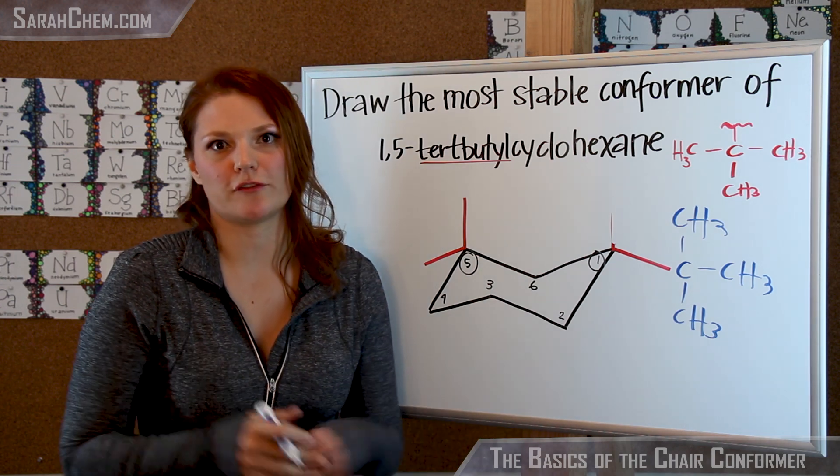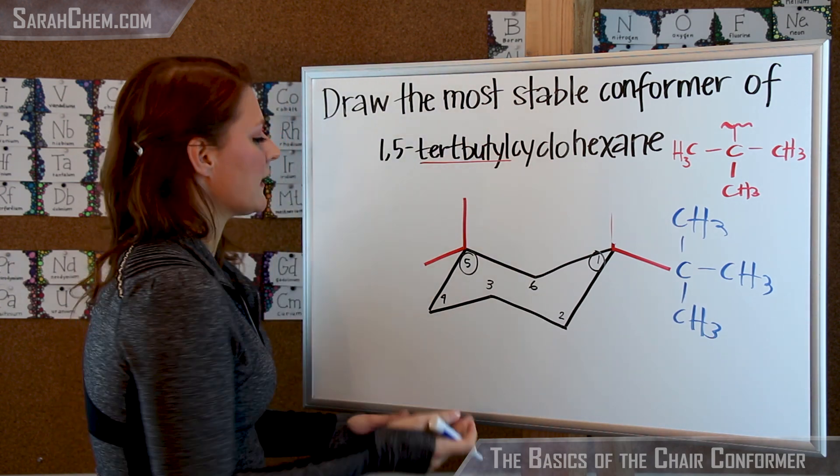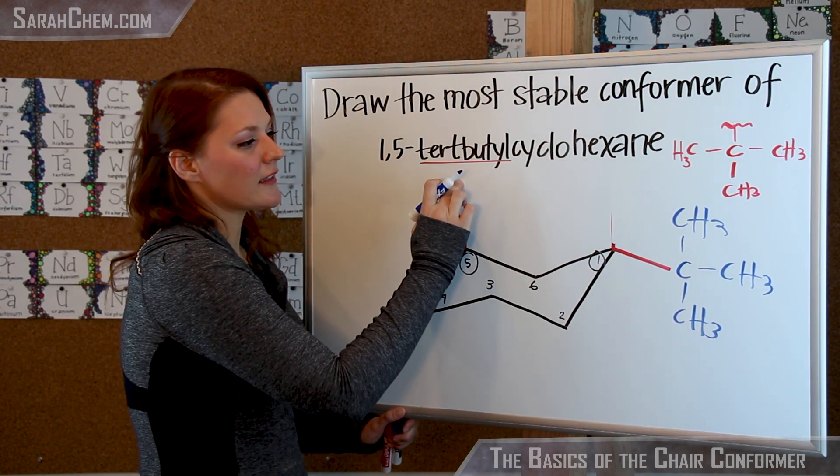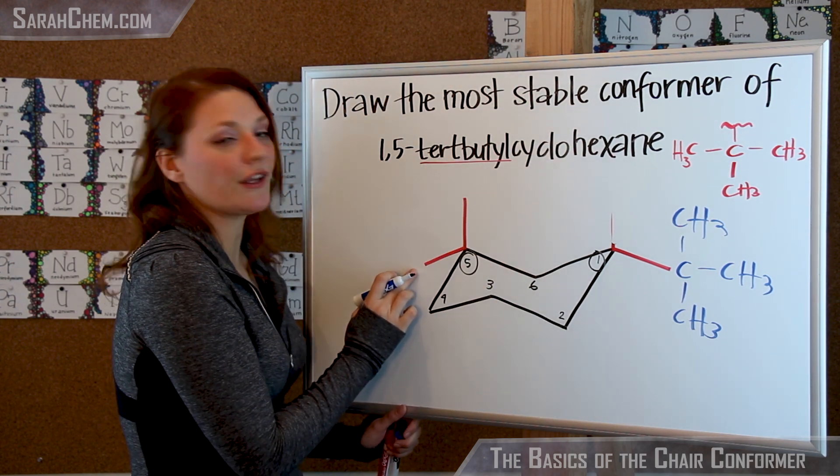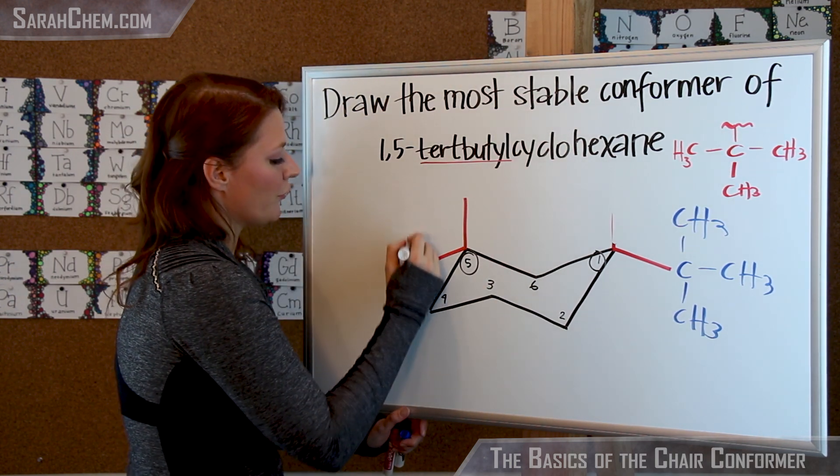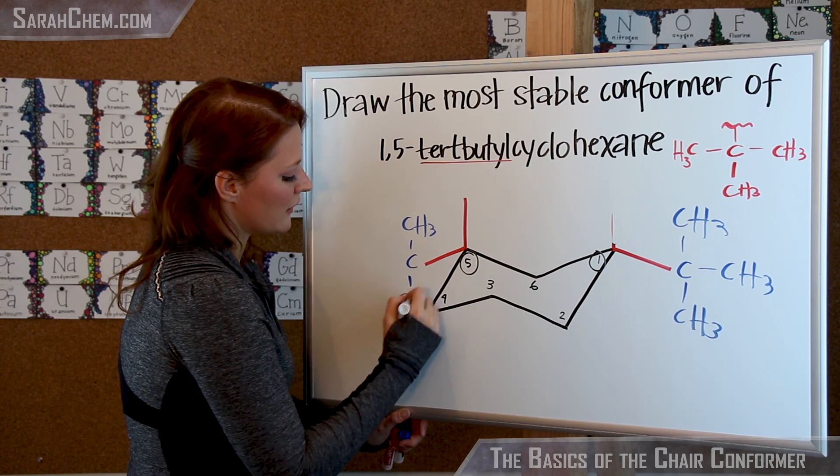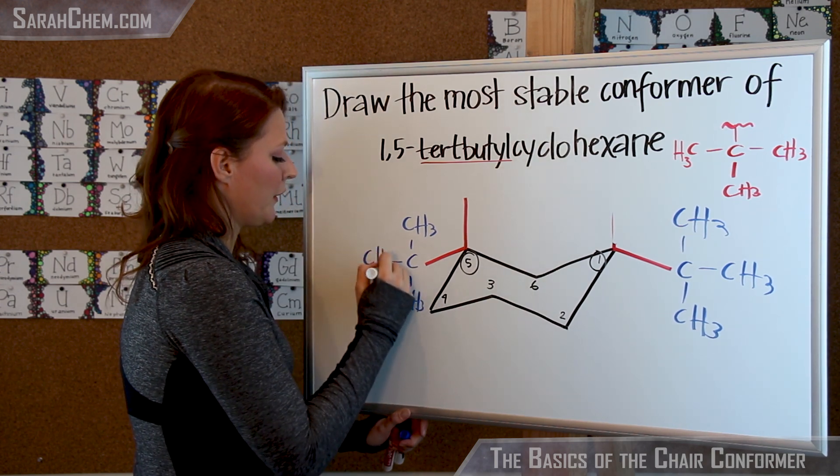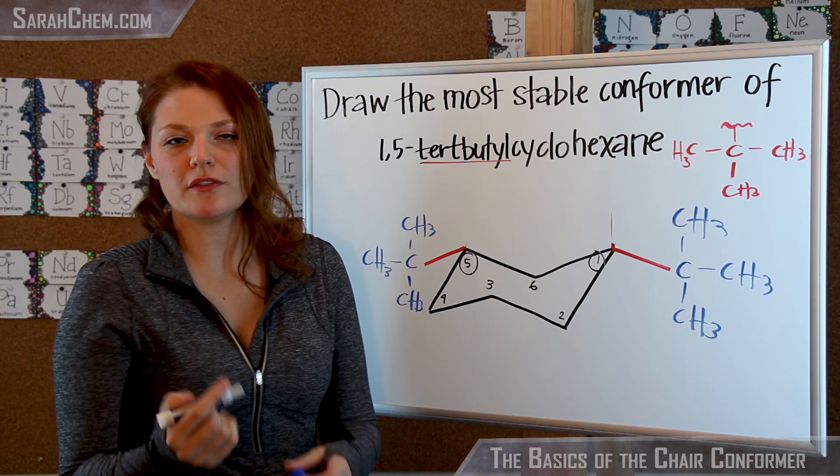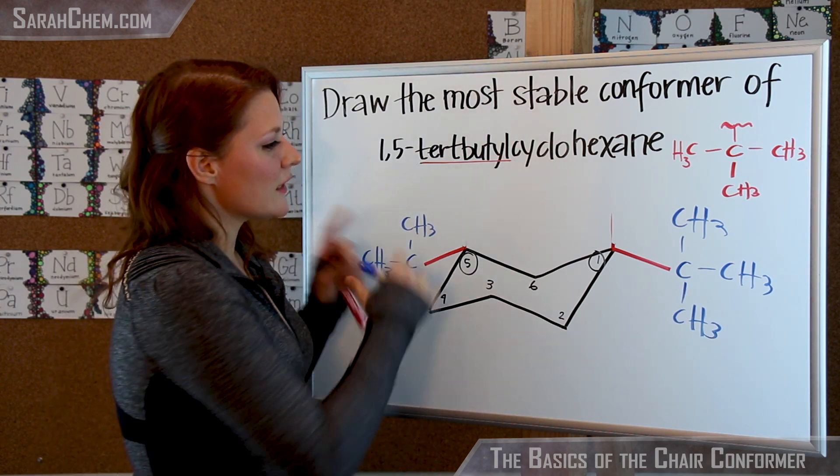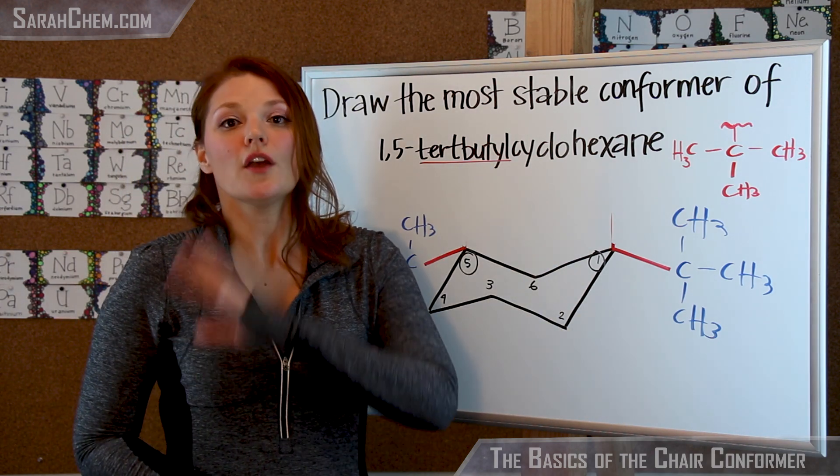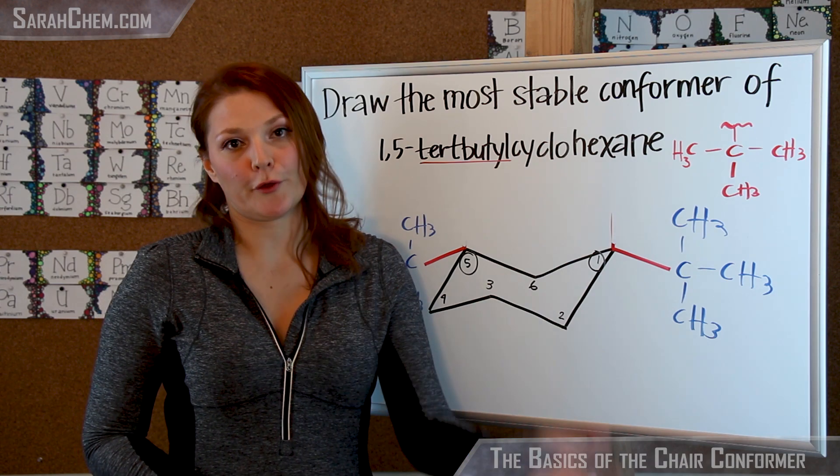and I'm not even worried about that guy. So on that end it would be a hydrogen, which we don't have to draw in. Now using the exact same logic over here, either axial, where it could interact, or over here where it has more room, and again, for stability's sake, we're going to choose to give this more room. And once again, this becomes irrelevant, there is a hydrogen there, but we're not drawing it in. So this is how you would decide to draw your most stable conformer of a particular compound.